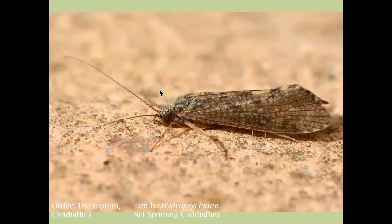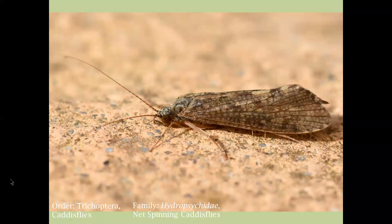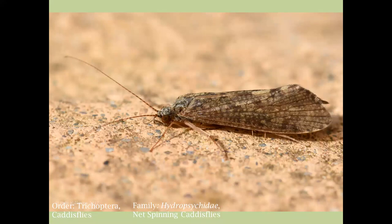This adult caddisfly looks like a moth, and that's because Lepidoptera and Trichoptera — caddisflies and butterflies — are closely related. Like a butterfly, it has scales on its wings, and it holds its wings kind of in a triangle shape on its back. There are loads of caddisfly adults starting to pop up right now with little black wings — you should see them in almost every stream system and riparian area in our region right now.